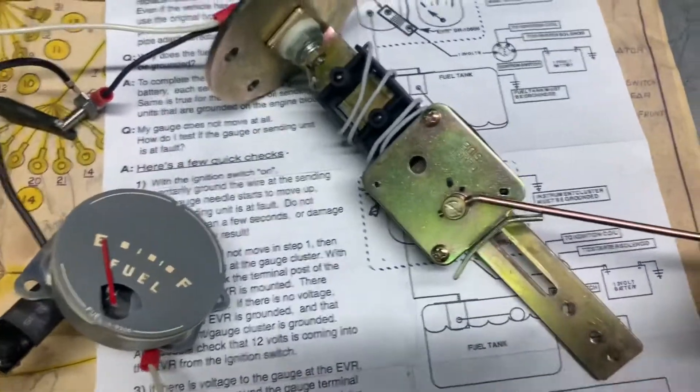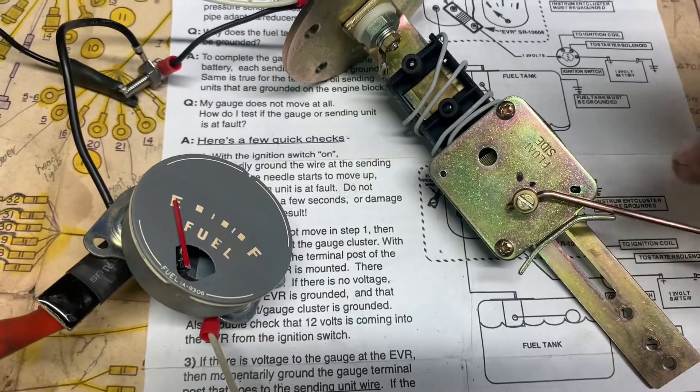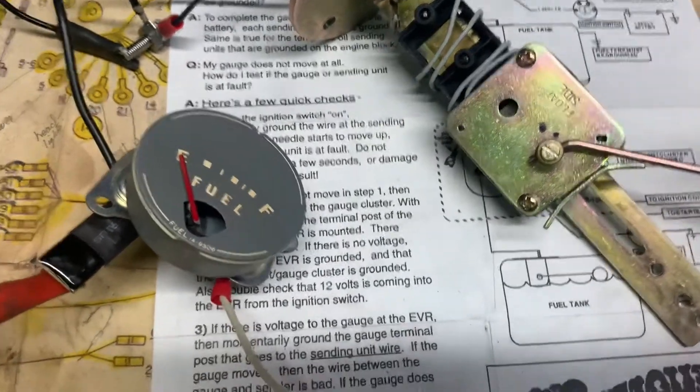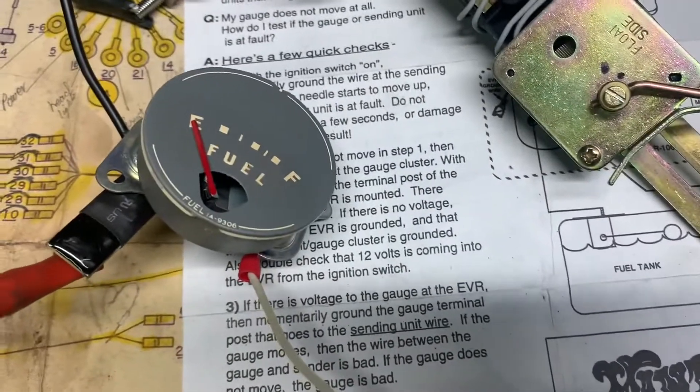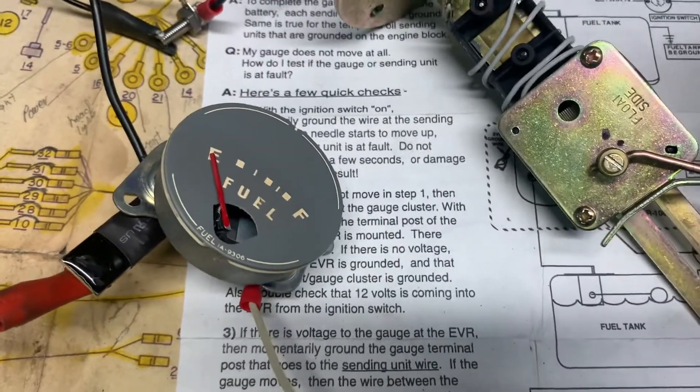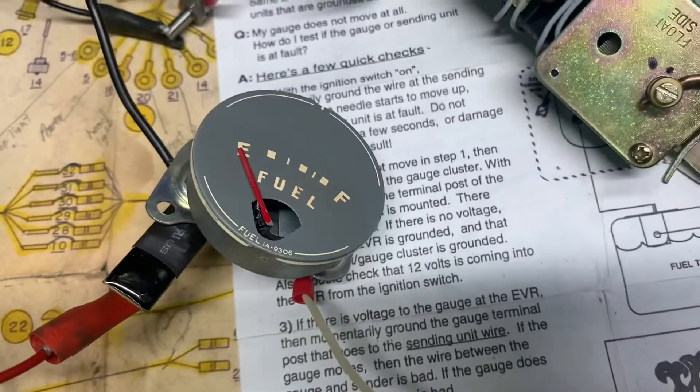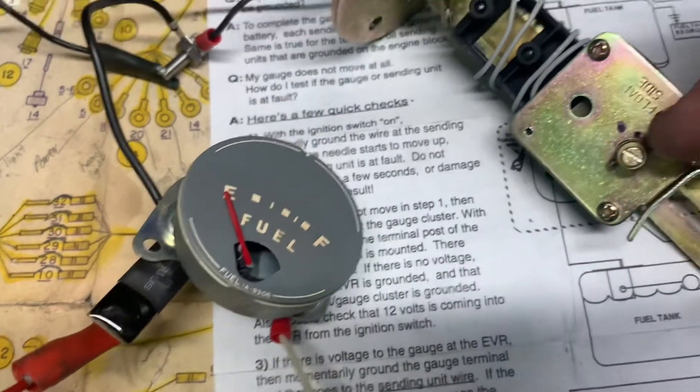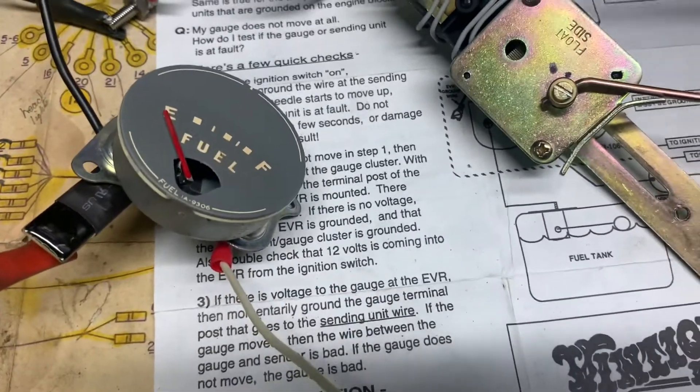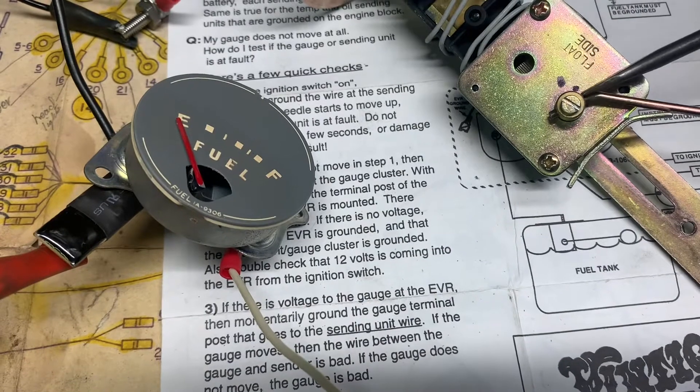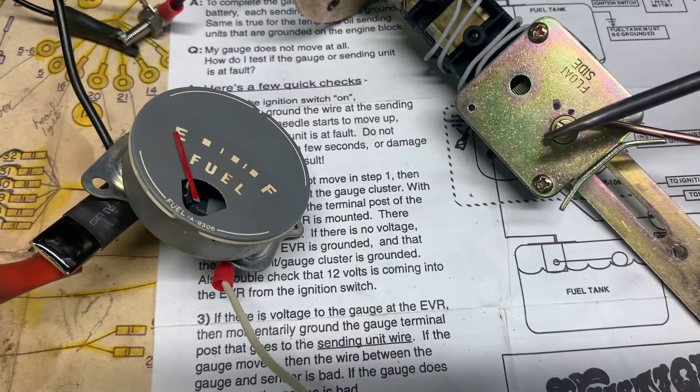Before I put the bend in it, it would have actually turned even more counterclockwise or clockwise. So even at where it is right now, which is about four o'clock, you can see I'm reading empty on my gauge. If it was before the bend, if it was at about five o'clock on the screw, you can see it coming out the other side.